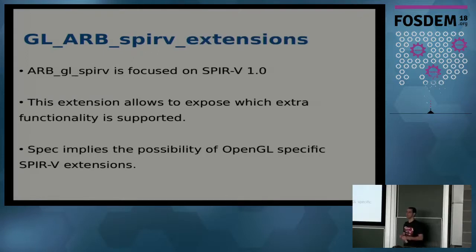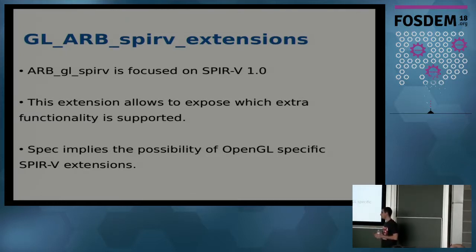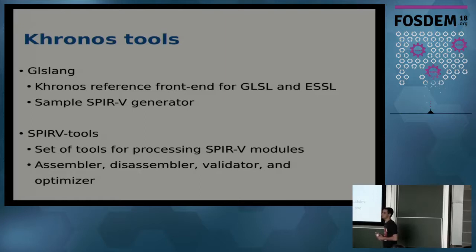There is also a smaller extension called GL_ARB_spirv_extensions. The main GL_ARB_GL_SPIRV extension is based on SPIR-V 1.0, so this companion extension allows specifying which extra features are supported. The spec implies that in some cases we will get OpenGL-specific SPIR-V extensions. Khronos also maintains reference front-ends: GLSLang, which uses these extension definitions to create SPIR-V binaries from GLSL, and SPIR-V Tools — assembler, disassembler, validator, etc.